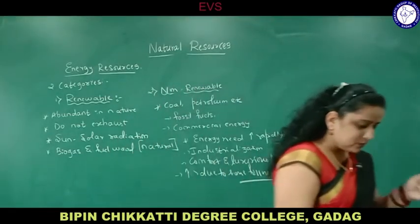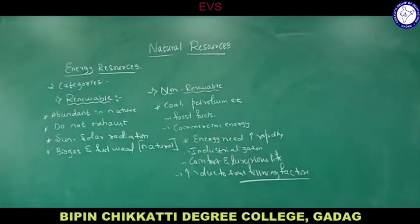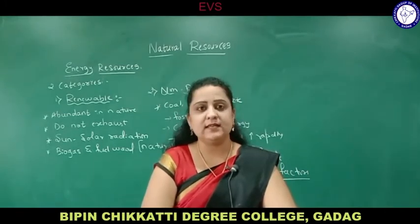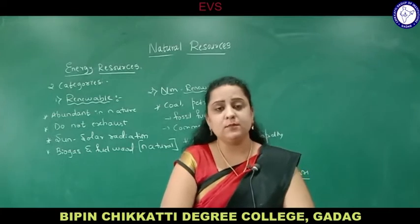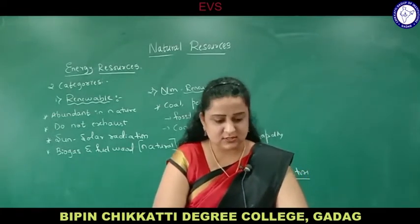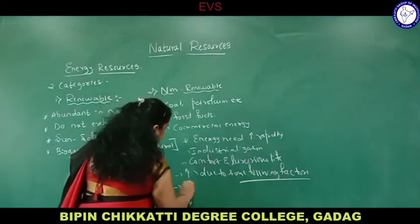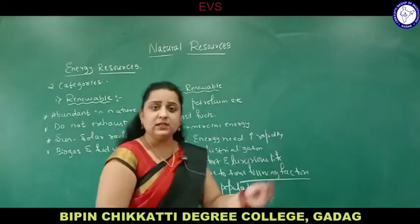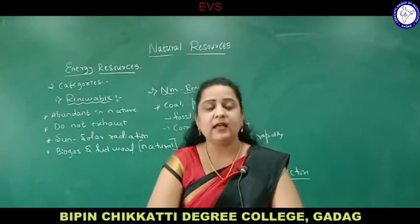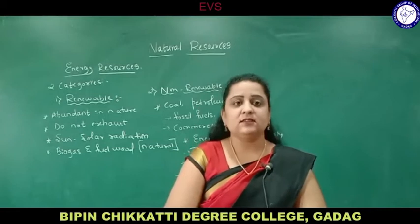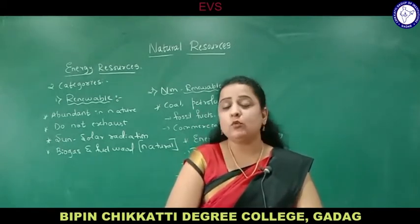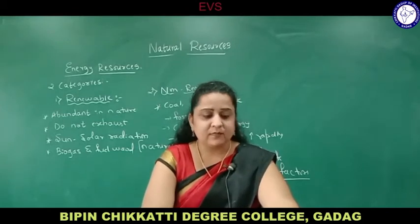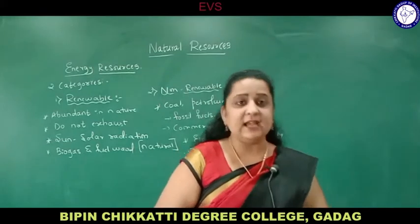Number one: growth of human population. Whatever resources are available in nature, the main reason we are facing certain crises is our increasing population. As population increases, our needs also increase — for food, shelter, accommodation, employment. We require more food, more water, more space to live, more buildings, more jobs. Due to increasing population, our needs increase. Then coming to industrialization and agricultural advancement.